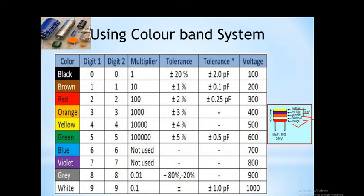Various capacitors are shown — electrolytic capacitor, metal capacitor, mica capacitor, and variable capacitor. To remember the sequence of colors, we remember the statement: 'B, The Joy of Great Britain has a Very Good Wife.' The numbers assigned to each color are the same, and the multiplier and tolerance for each color are also shown. Working voltage for every color code is shown from black towards white.